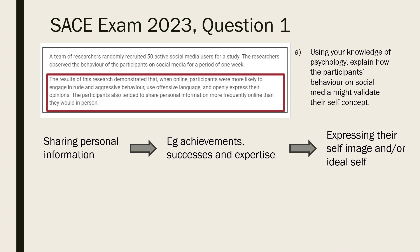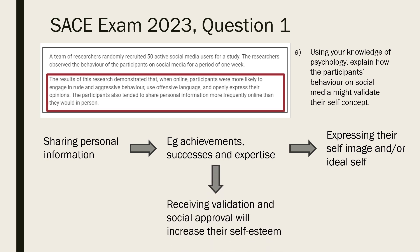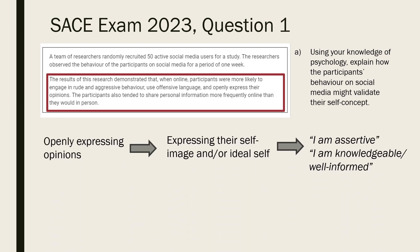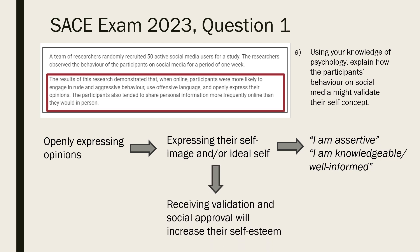For a two-mark answer, pick one behaviour and relate it specifically to self-concept. For example, participants may share more personal information online — such as their achievements, successes and expertise — in order to express aspects of their self-image or ideal self. Receiving validation and social approval about this information will then increase their self-esteem. Alternatively, participants openly expressing their opinions can be related to expressing their self-image or aspects of their ideal self, such as 'I am assertive' or 'I am knowledgeable and well informed about this topic.' Receiving social approval for their comments will validate this part of their self-concept and increase their self-esteem.